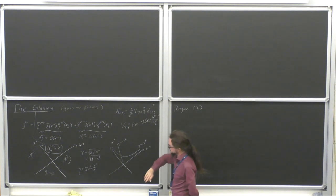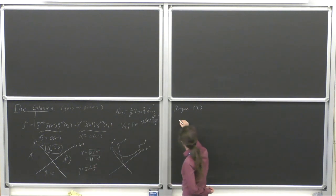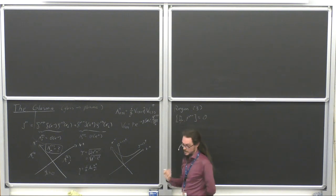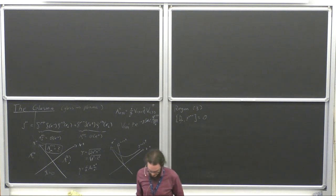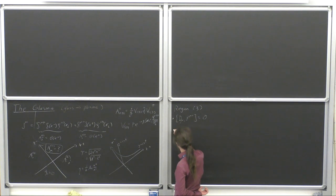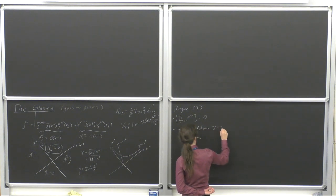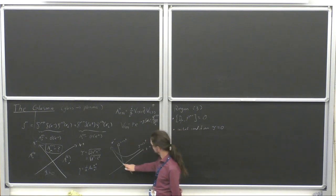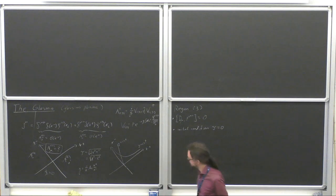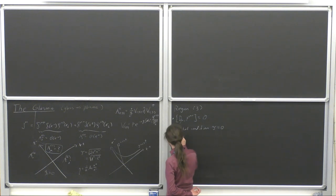In region three — inside the forward light cone — we should have D_mu F^{mu nu} equal to zero; there are no currents there, and we want to do this in a way that completely forgets the currents. This is the equation we want to solve. We need an initial condition; we're going to solve this as an initial condition problem at tau equals zero. This tau equals zero covers both edges of the light cone.